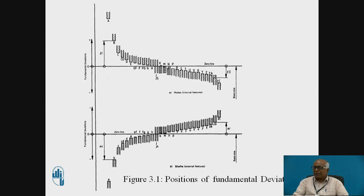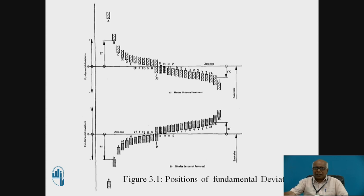This figure has been taken from Bureau of Indian Standards 919, 1993. As you can see, the letters A, B, C, D, E, etc. denote the tolerance zones — that is, the location of the tolerance zone of each fundamental deviation. From A to H, these zones are located above the zero line for holes.